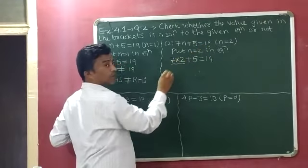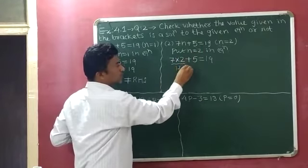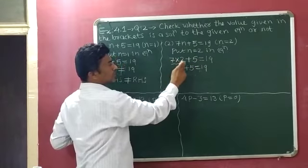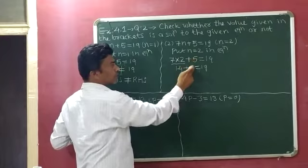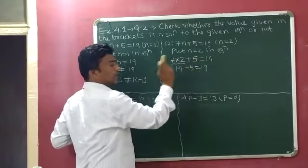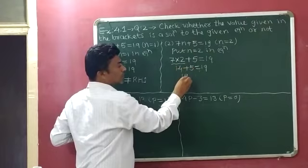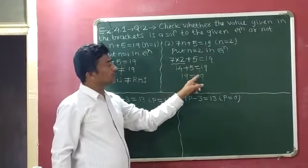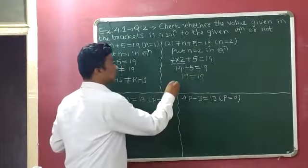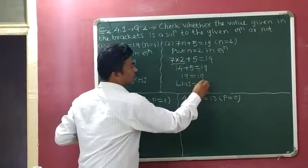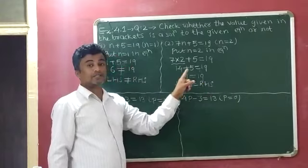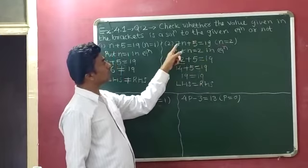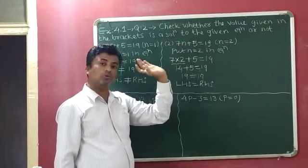Now we solve: 7 multiplied by 2 gives 14, plus 5 equals 19. So 14 plus 5 gives 19, and 19 equals 19. This means LHS is equal to RHS. Therefore, n equals 2 is a solution of the equation 7n plus 5 equals 19.